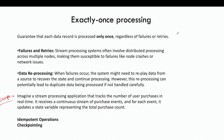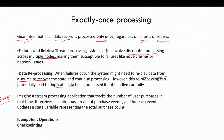The next challenge in stream processing is exactly-once processing. This is simply the guarantee that each record will be processed only once regardless of failures or retries. Stream processing systems are generally distributed processing applications with various nodes involved — maybe more than 100 nodes.